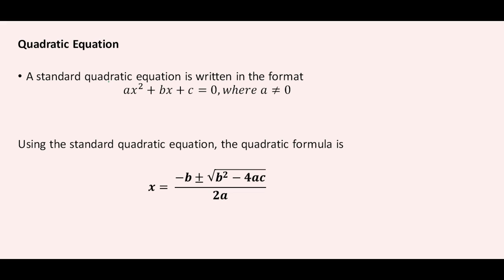A standard quadratic equation is written in the form AX squared plus BX plus C. An important thing to note is that A must be non-zero — it cannot be equal to zero. Using the standard quadratic equation, the quadratic formula is X equal to minus B plus or minus the square root of B squared minus 4AC, divided by 2A.